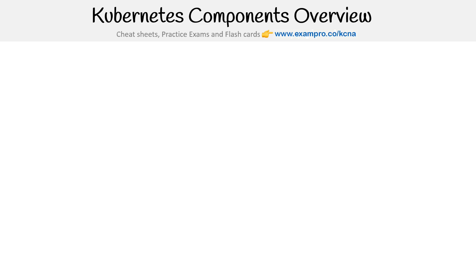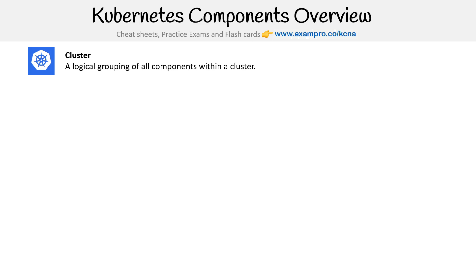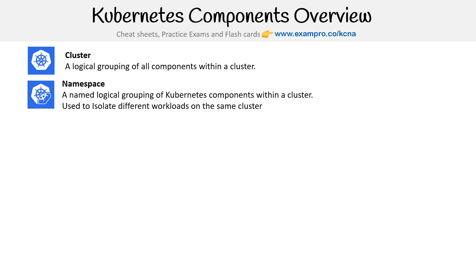At the top of our list is the cluster. This is a logical grouping of all the components within a cluster, so mostly everything that follows is generally inside of a cluster, though there are some exceptions. The next is a namespace — a named logical grouping of Kubernetes components within a cluster, used to isolate different workloads on the same cluster.